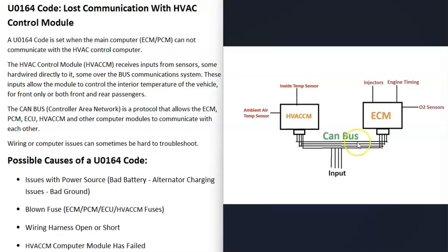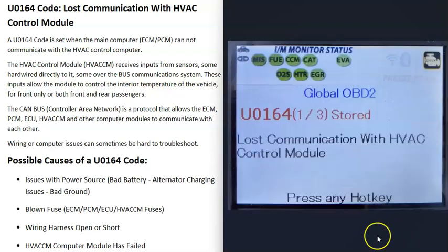When you get a U0164 code, for some reason the main computer can no longer communicate with the HVAC control module — there's some kind of issue going on. One thing to note about this code, or any wiring or computer code, is that it can be kind of hard to troubleshoot because wiring and computer issues can be difficult to diagnose.